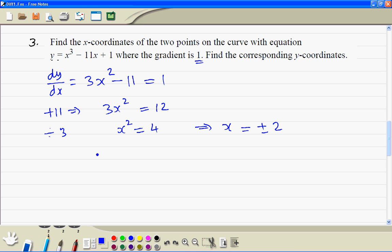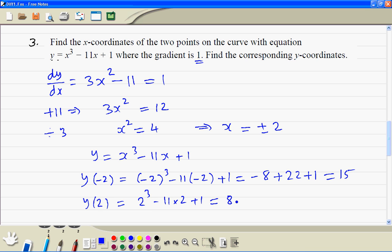This means x is equal to 2 or also minus 2. So y is equal to x cubed minus 11x plus 1. When x is minus 2, y is gonna be minus 2 cubed minus 11 times minus 2 plus 1, so that's minus 8 plus 22 plus 1, so that's equal to 15. When x is equal to 2, so that's 2 cubed minus 11 times 2 plus 1, so that's 8 minus 22 plus 1.